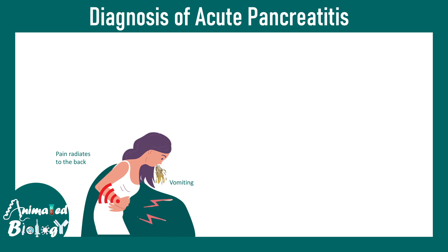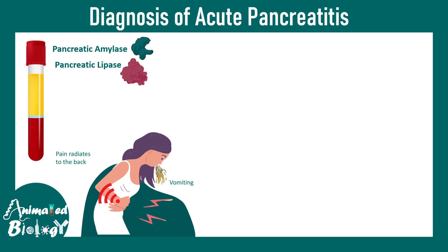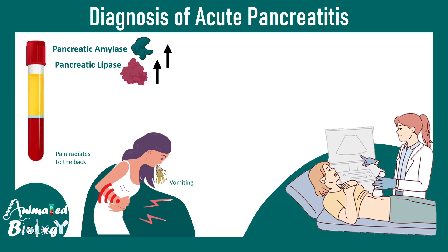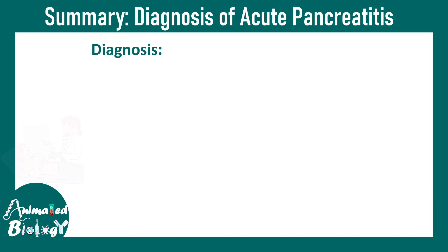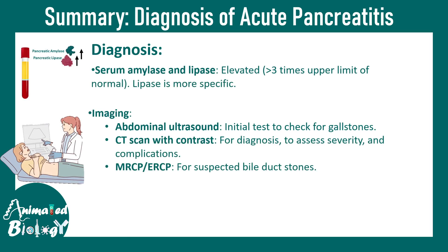For diagnosis of acute pancreatitis, clinical symptoms include pain in the epigastric area, vomiting, and pain radiating to the back. These must be paired with blood tests for serum amylase and lipase — both levels must be elevated more than three times normal. Upper abdominal ultrasound and arterial blood gas are additional diagnostic measures. Overall, diagnosis is twofold: blood-based tests and imaging-based tests.